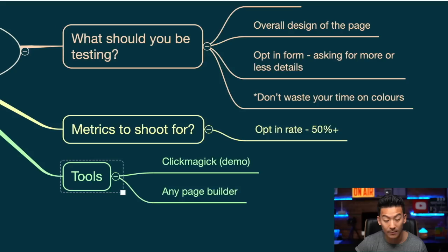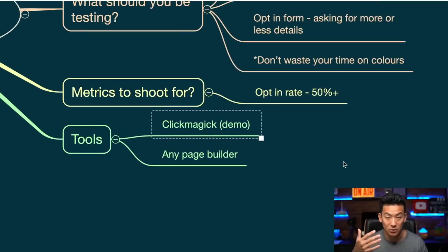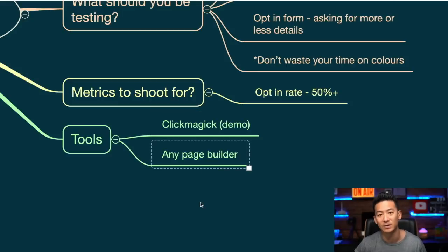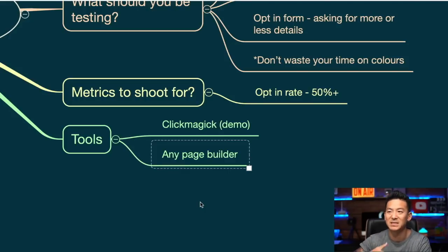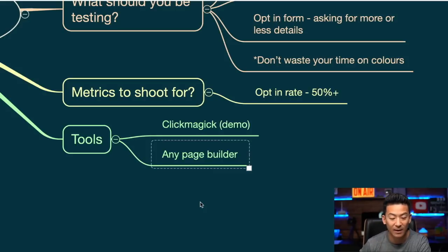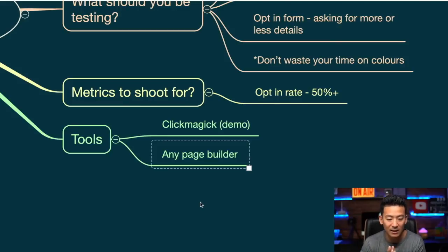Now, what tools should you use? I like to use ClickMagic, and I'm going to give you a full demo right now to show you exactly how you can do the split test — it's really, really easy. Or you can use pretty much any page builder. Be it ClickFunnels, GrooveFunnels, OptimizePress, WordPress, System.io, Builderall, GetResponse — a lot of them do have a page builder and most will have a split test tool. But I like ClickMagic because I think it's the most accurate; some page builders don't have a very accurate split tester.